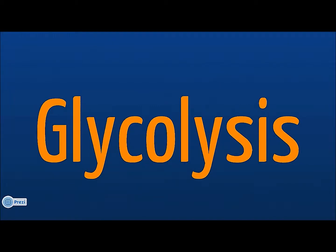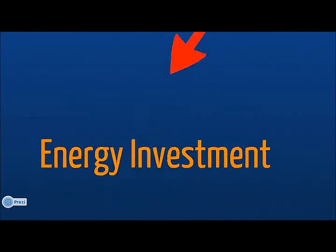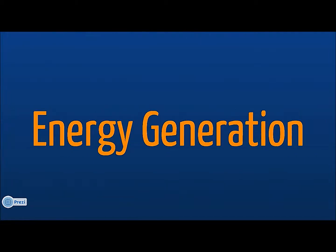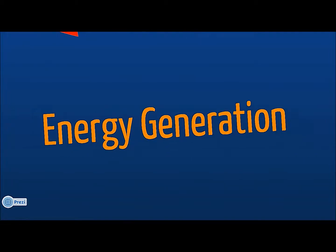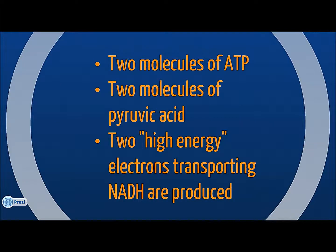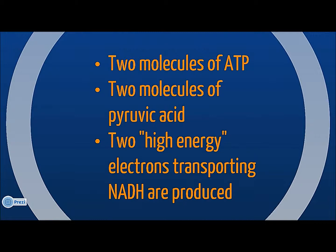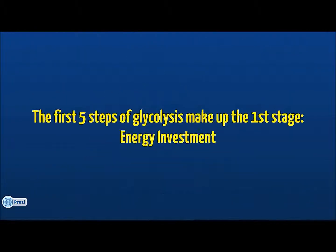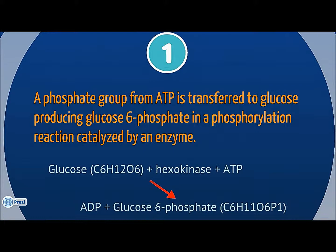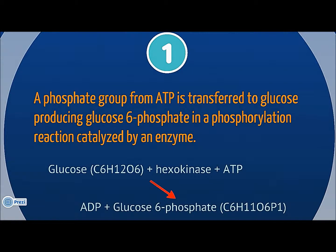Glycolysis is divided into two separate stages. The first stage is energy investment and the second is energy generation. The cycle has a net production of two molecules of ATP, two molecules of pyruvic acid, and two molecules of NADH. The first five steps of glycolysis make up the first stage, energy investment. First, a phosphate group is transferred from a molecule of ATP to the glucose in the cell's cytoplasm in a phosphorylation reaction.